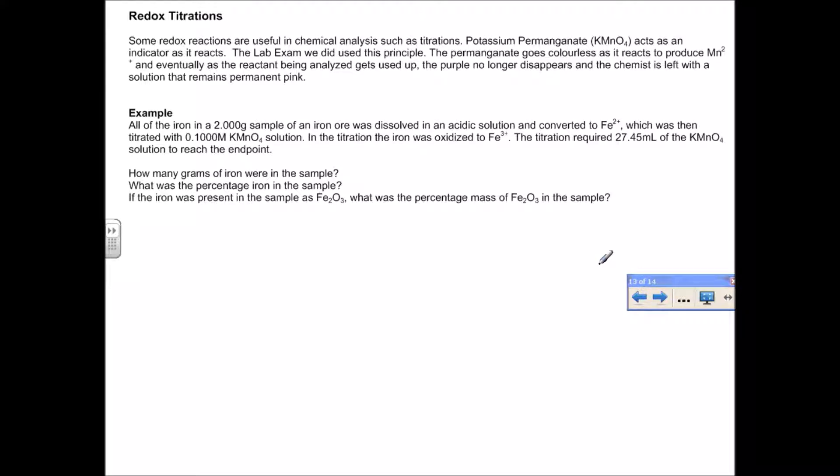Now you've seen redox titration. In a redox titration, the titrant is something that changes color. In our case, the permanganate we used changed color from purple to colorless as it was reacting with hydrogen peroxide. Once the hydrogen peroxide was all consumed, a pale permanent pink was produced. In redox titrations, the titrant can actually act as an indicator as well.